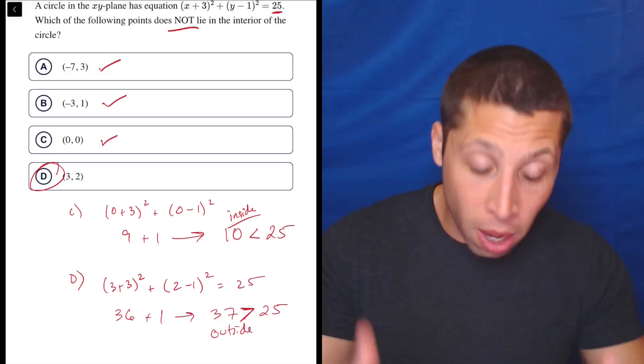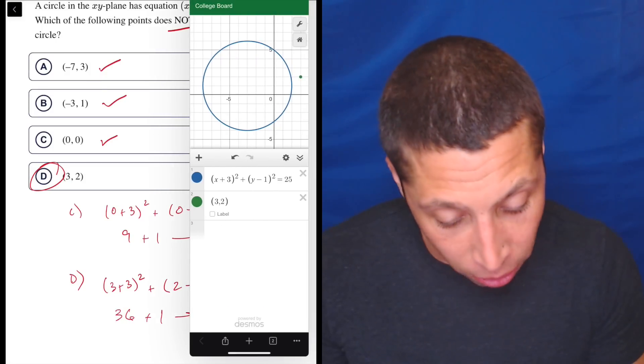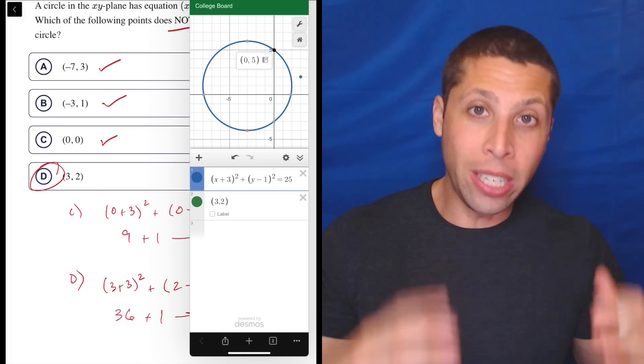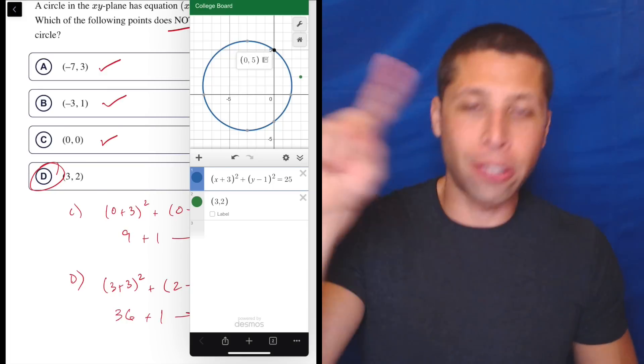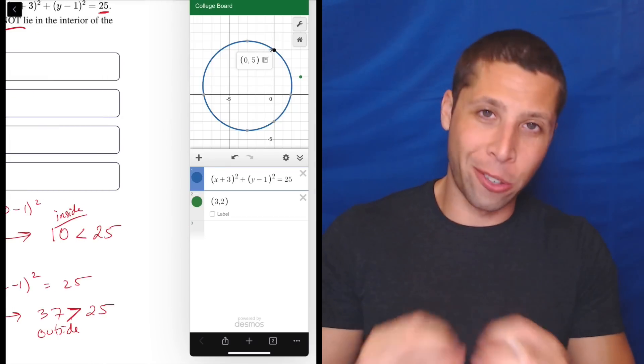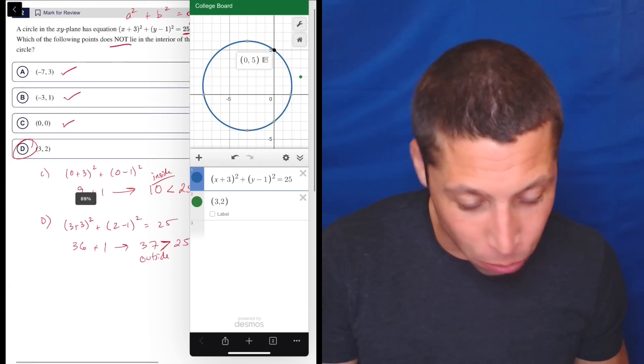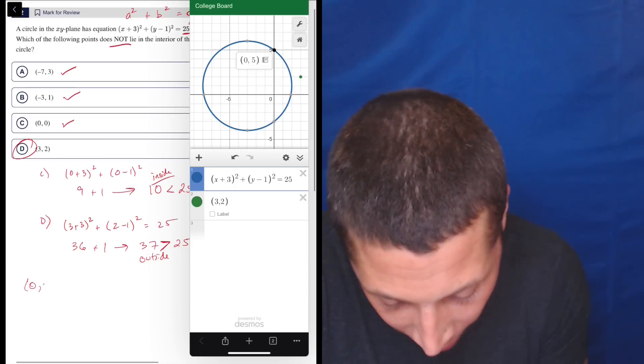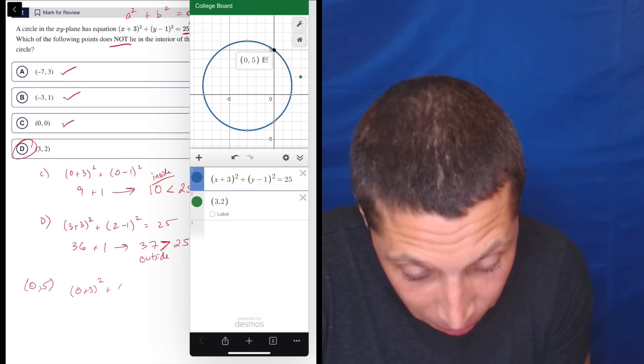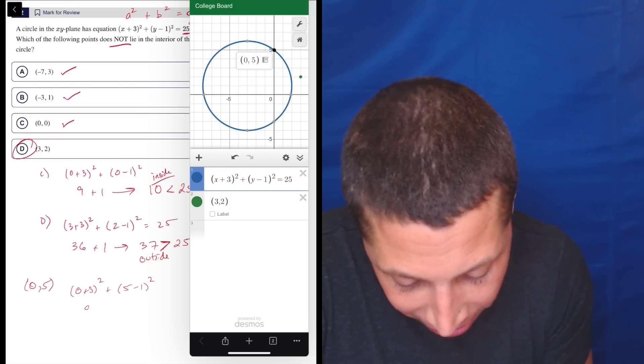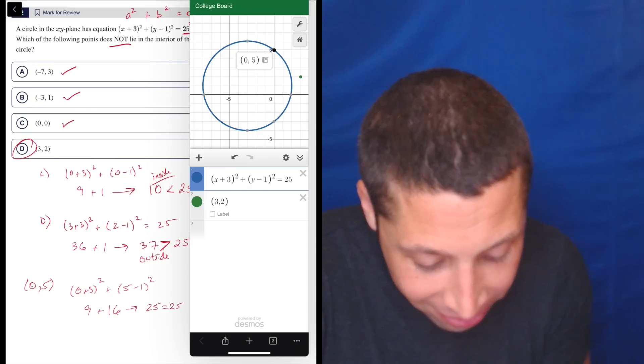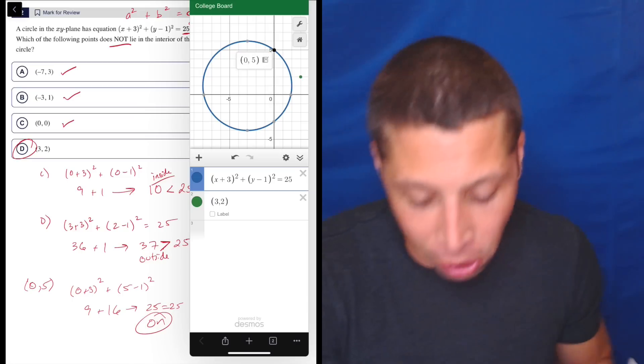This tells us that it's outside because the distance is greater. Now, if I picked a point that was on the circle, then it would equal itself, right? Because think of all these points right here. Just think of something like 0, 5. The reason that we know that that point is on the outside of the circle is that the distance is the same as the radius, right? So that 25 would show up on the left as it would on the right. So 0, 5, just to put it in. So that would be 0 plus 3 squared plus 5 minus 1 squared. That's 9 plus 4 squared is 16. That's 25. And yes, equal. So that means that this is on the circle.